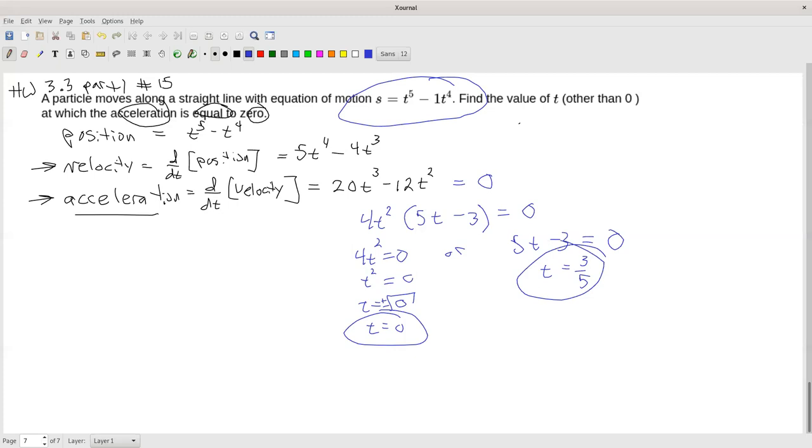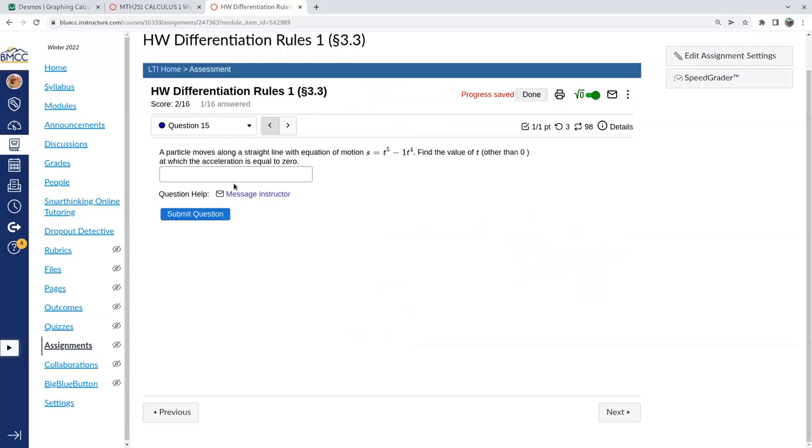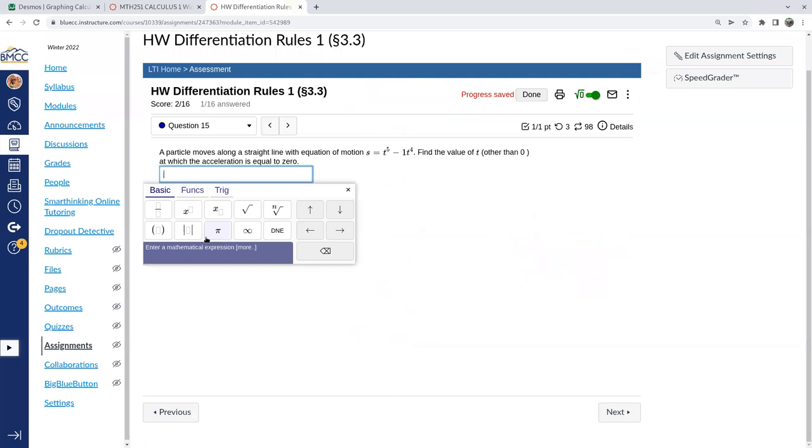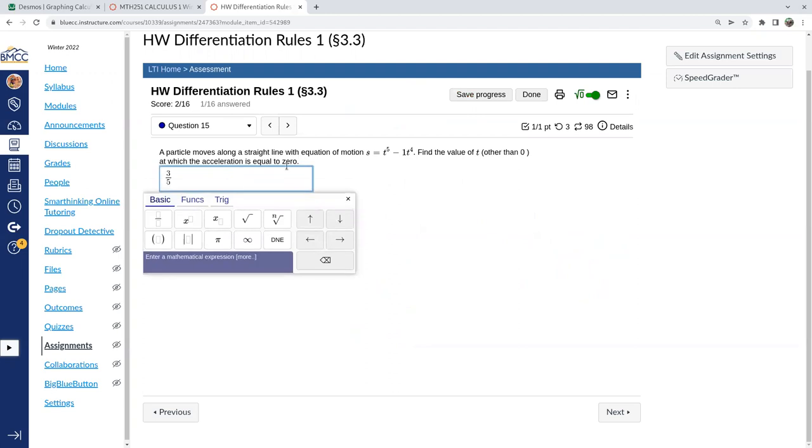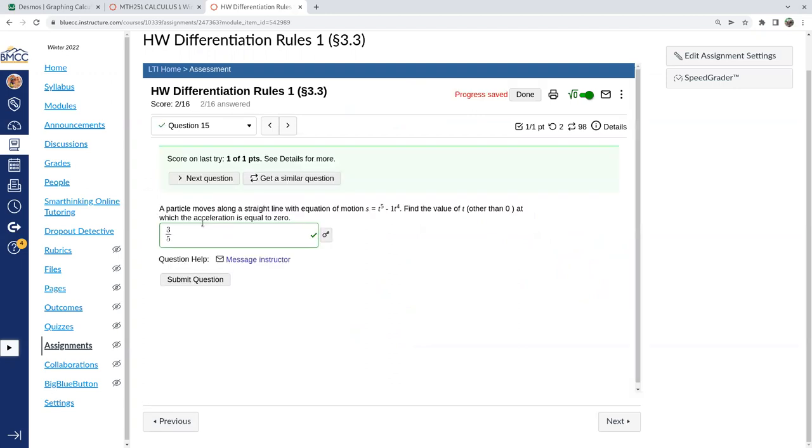And if I double check the homework, it should prompt me for more than one answer. If I click here, it says enter a mathematical expression. Oh, other than zero. It helps if I read the directions. So mine would just be 3 fifths. Sweet.